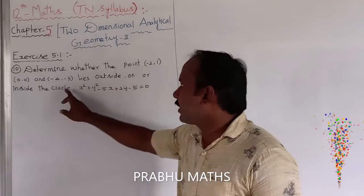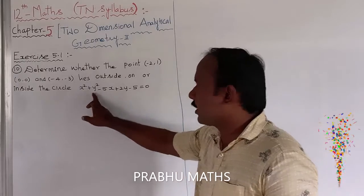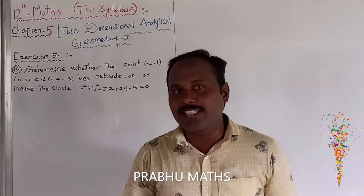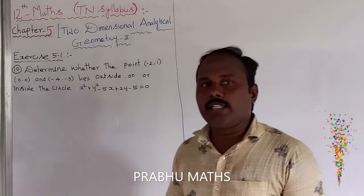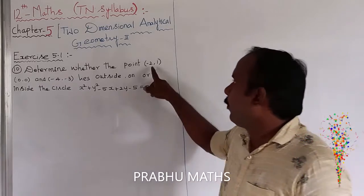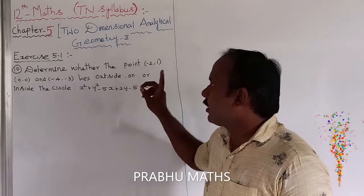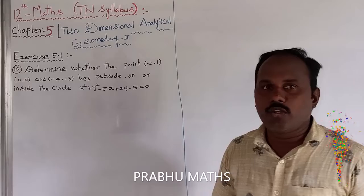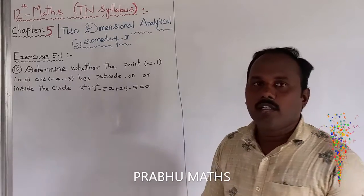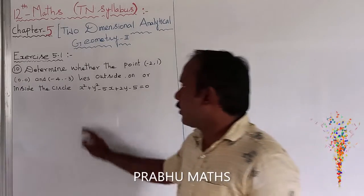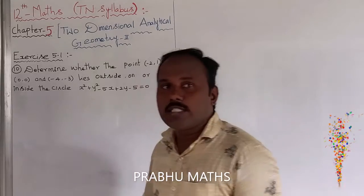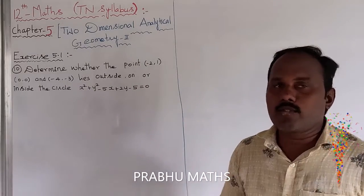Suppose the point is replaced by x and y. If that equation is greater than 0, greater than means outside of the circle. If it is less than 0, this means inside the circle. If it is equal to 0, this means the point is on the circle.